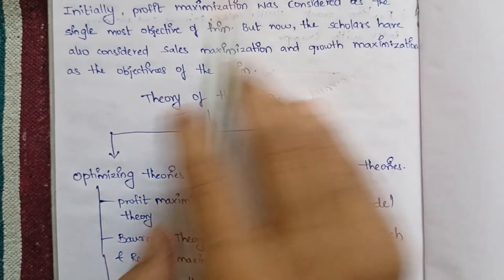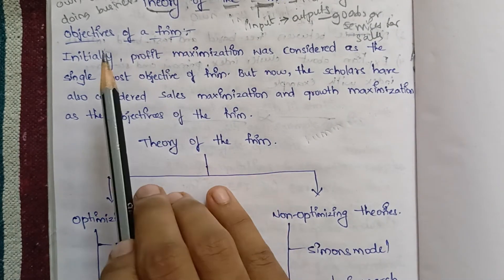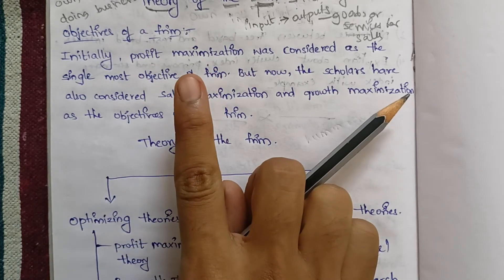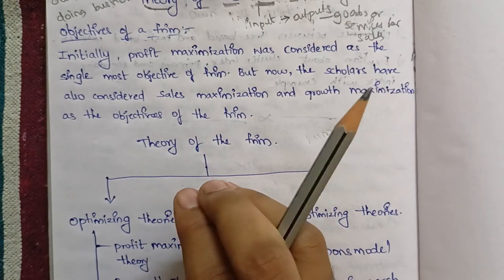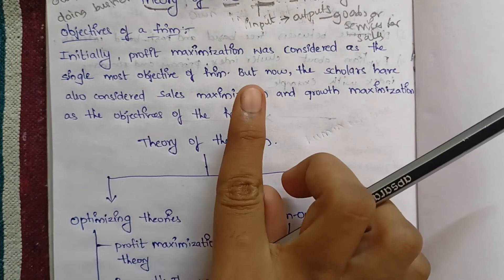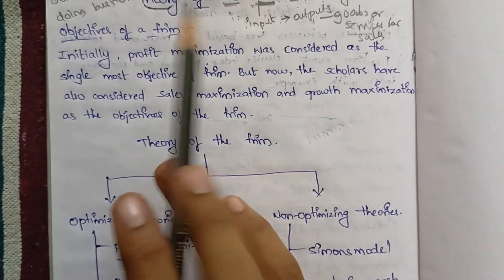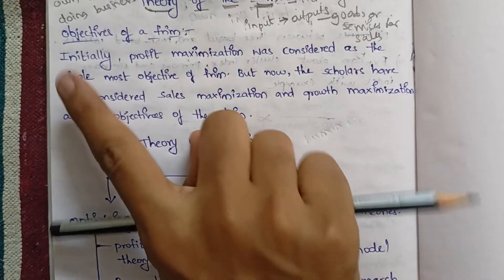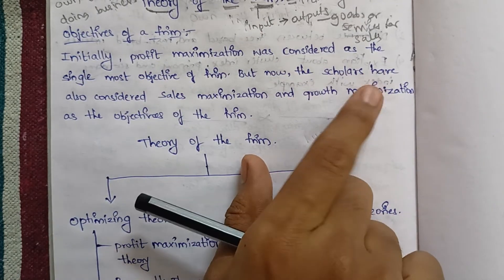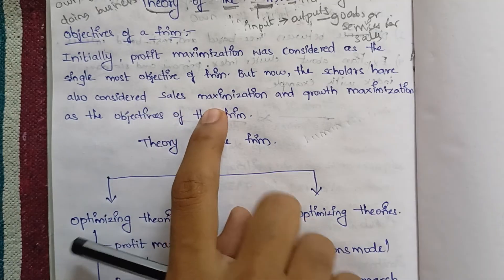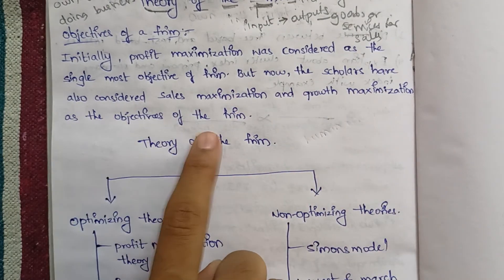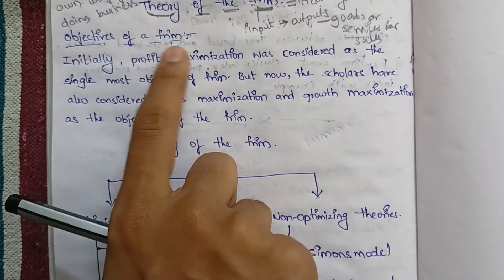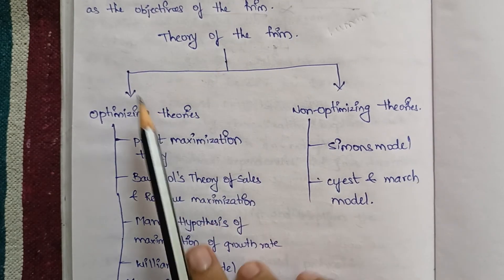Now let's look at the objectives of the firm. Initially, profit maximization was the main objective. But nowadays that has changed — the aims now also include sales maximization and growth maximization. Initially profit maximization was created as a single most objective of the firm, but now scholars have also considered sales maximization and growth maximization as objectives.